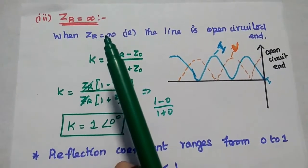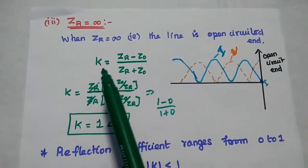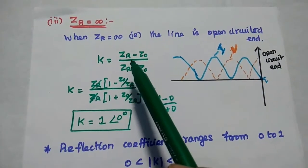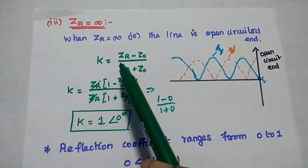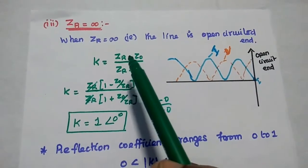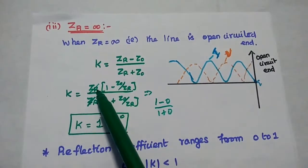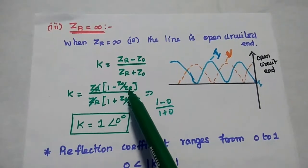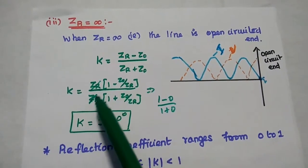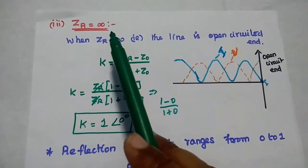The third condition is ZR equal to infinite. When ZR is equal to infinite, that is the line is open-circuited. The K value is equal to ZR minus Z naught divided by ZR plus Z naught. We cannot substitute this infinite value directly in this formula, as we would get K equal to infinite. So we simplify this ratio by taking ZR as common from the numerator and denominator. The numerator becomes ZR into 1 minus Z naught by ZR, and the denominator becomes ZR into 1 plus Z naught by ZR. Then we cancel the ZR value, and since anything divided by infinite becomes 0, we can substitute the value.